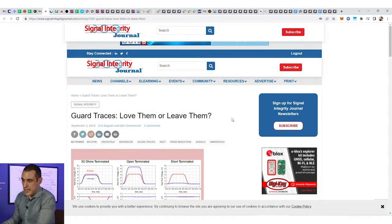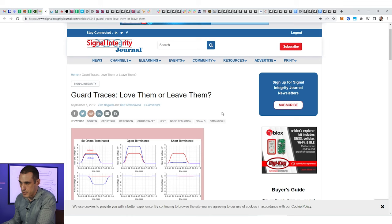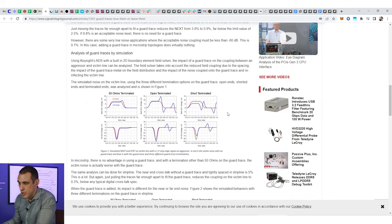Now, on our previous guard trace and crosstalk video, Bert Simonovic actually posted a link to his Design Con paper that he did with Eric Bogatin and it has been republished on Signal Integrity Journal. So now let's take a look at some of those results in that paper and see whether or not they're really consistent with the results shown by Eric Bogatin in his Altium Live presentation, as well as what we saw from the Symbior results in our previous video.